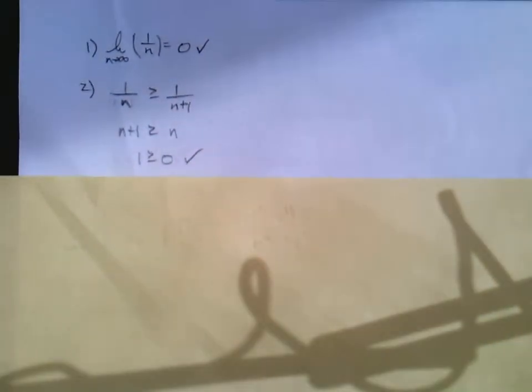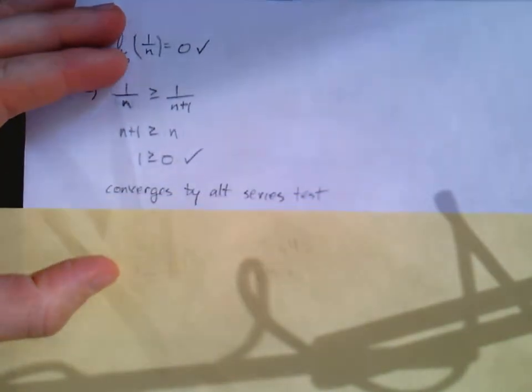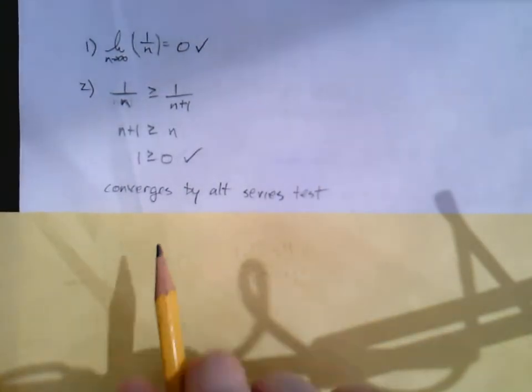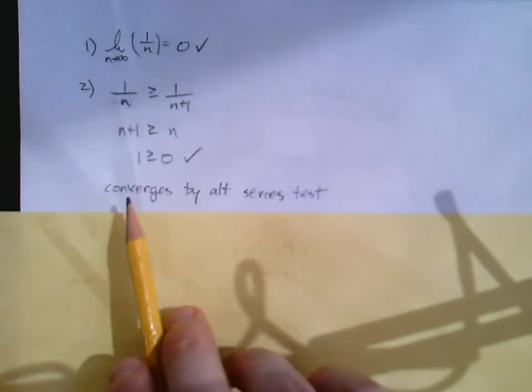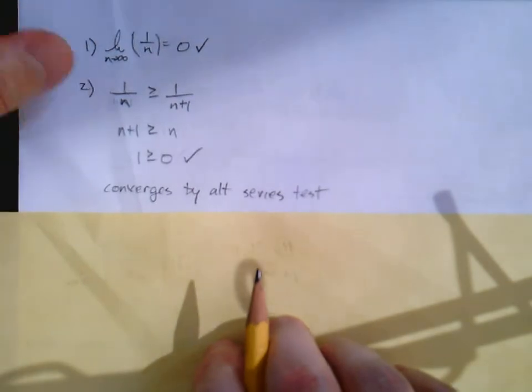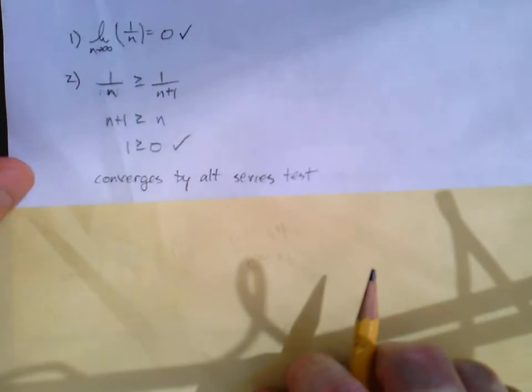Both conditions worked out for our alternating series test. So we know that at x equals negative 1, our series converges. It does converge at that endpoint. That's pretty exciting.